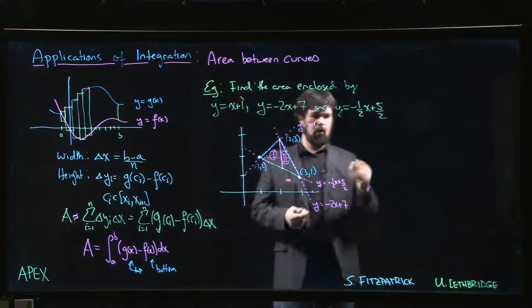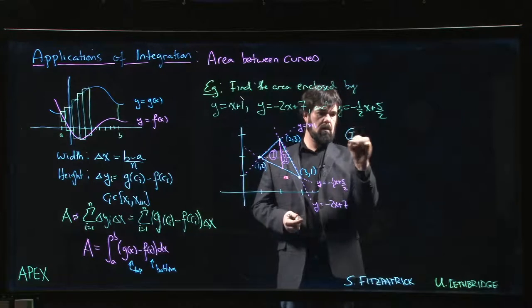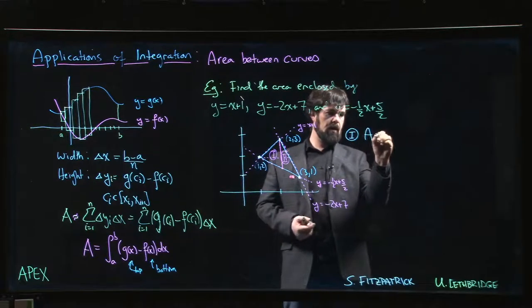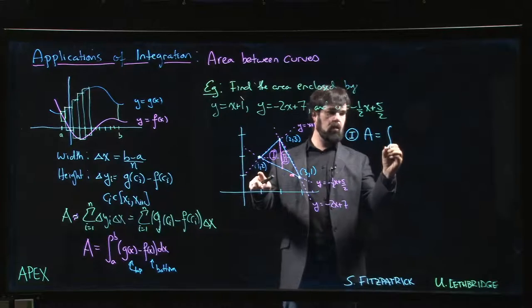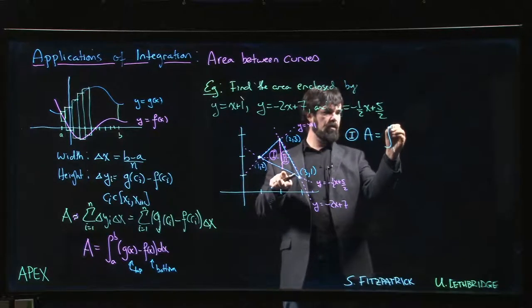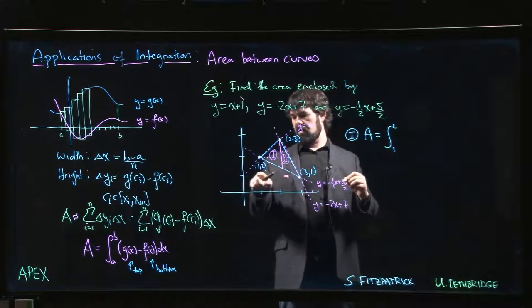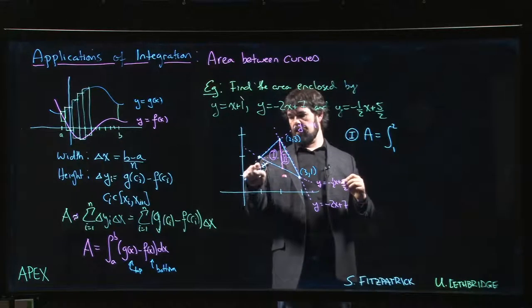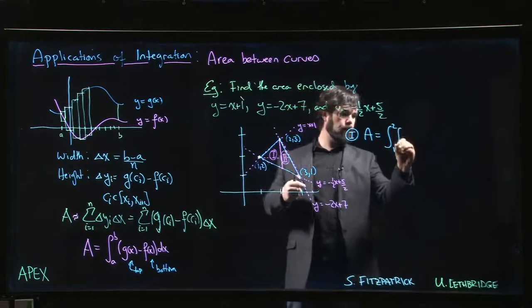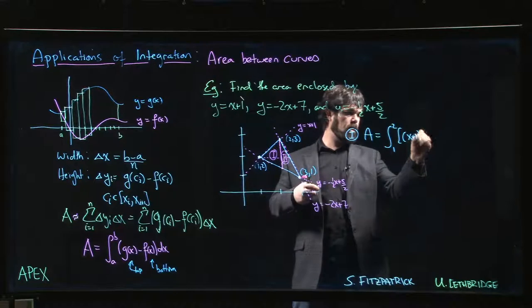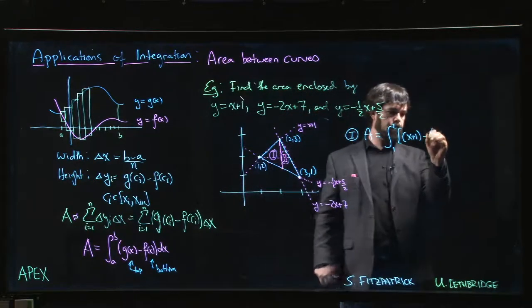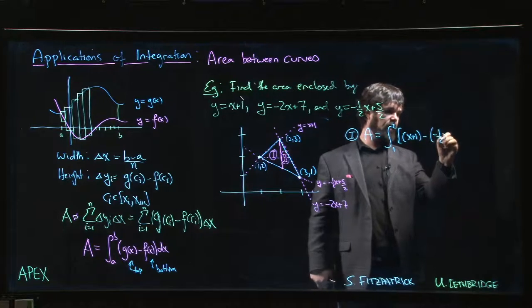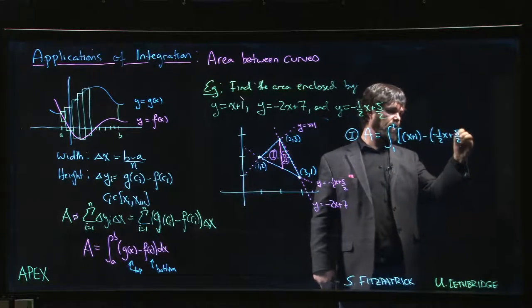So region 1, area is going to be what? We start at x is equal to 1. We end at x is equal to 2. And for x between 1 and 2 the upper curve is x plus 1. The lower curve is minus 1 half x plus 5 over 2.